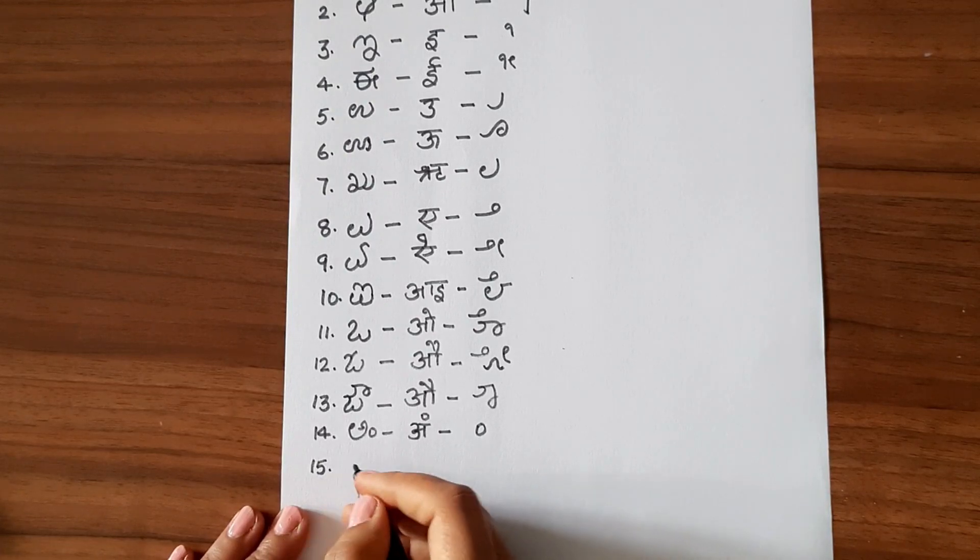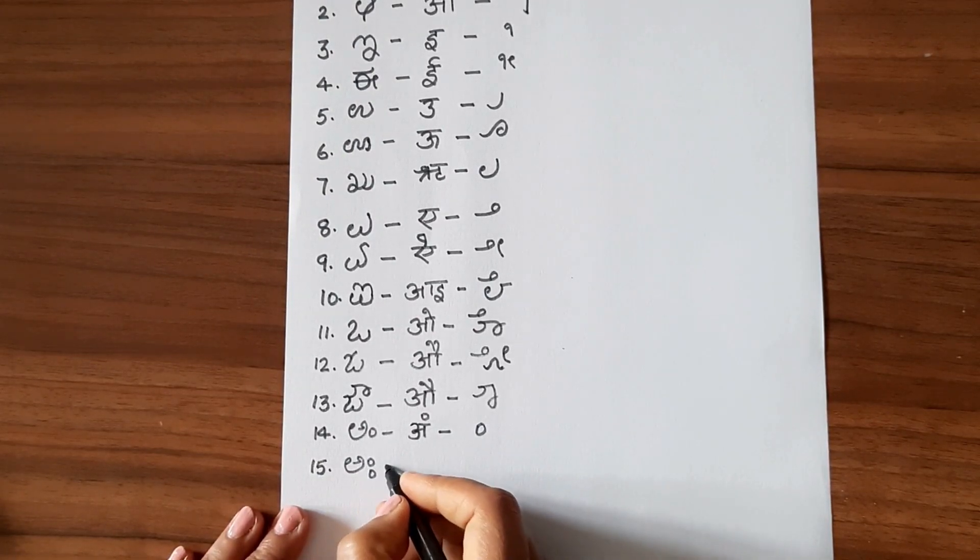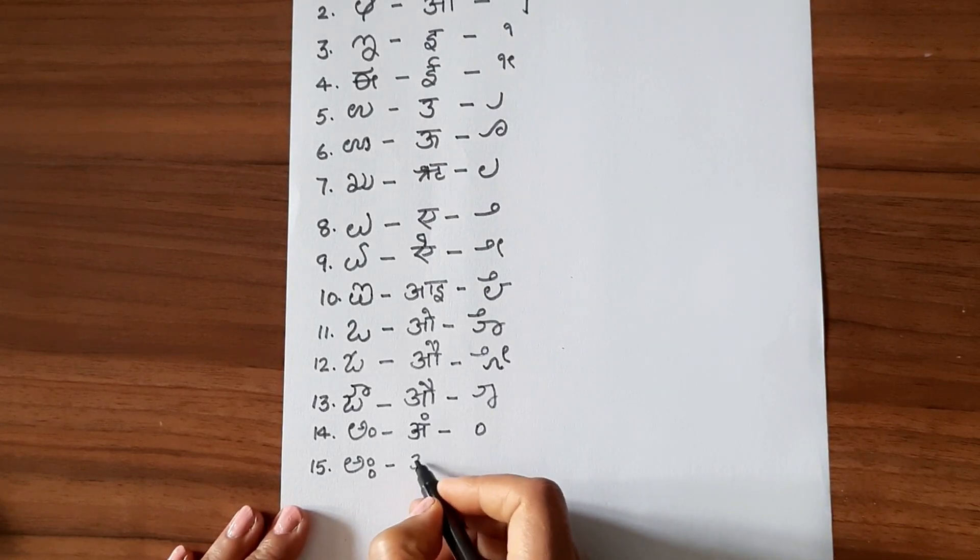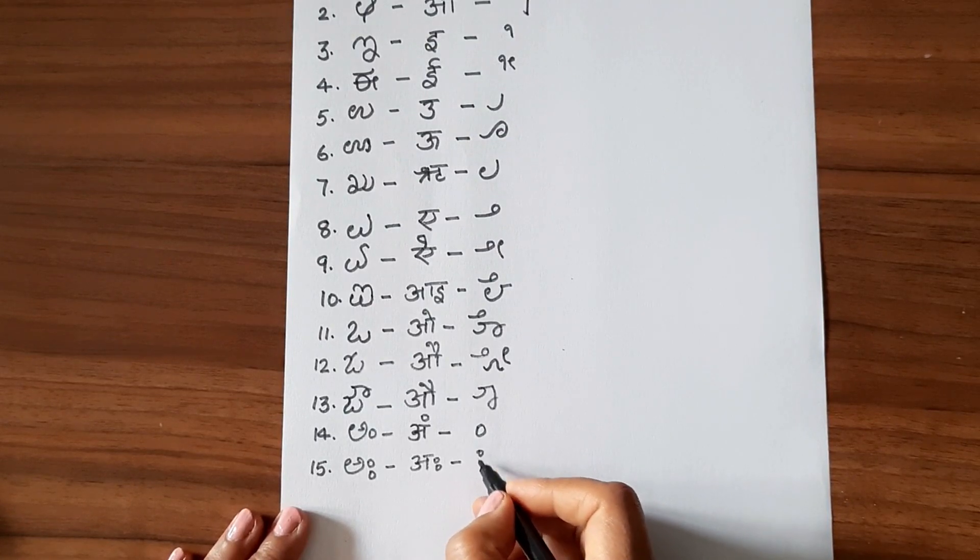15th one is Ah, and Ah ki matra is like two dots.